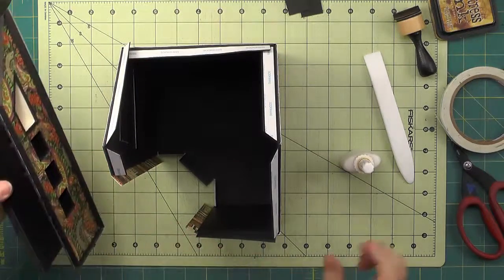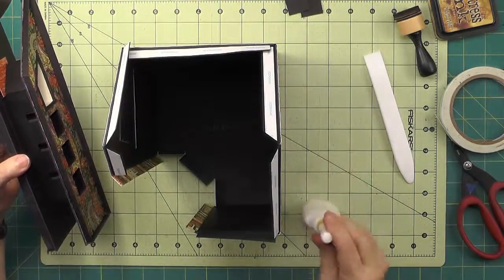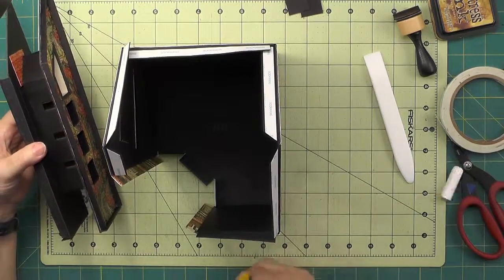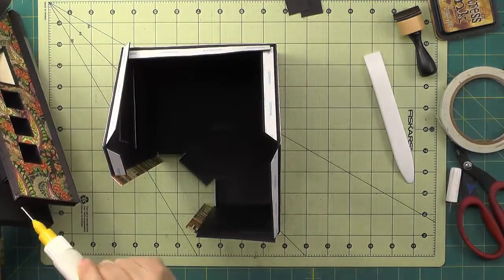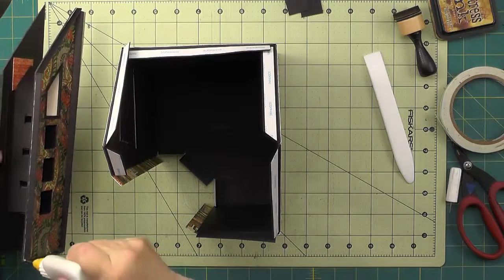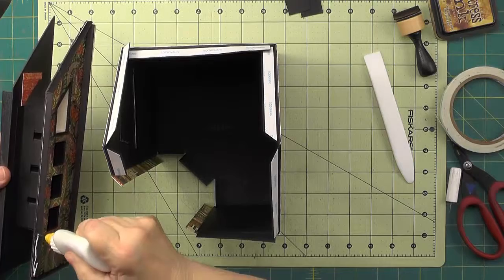I'm going to try to fold these out of the way a little bit so they don't engage prematurely. Then I'm going to start by running a bead of glue on this bottom edge and this side edge here.